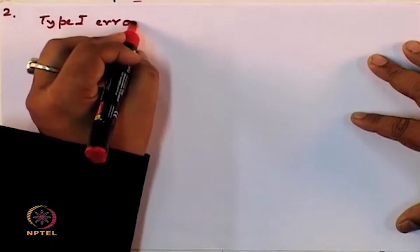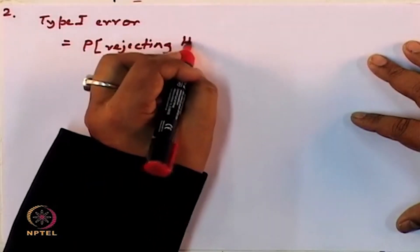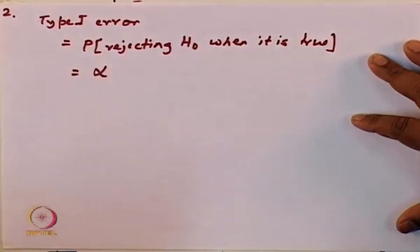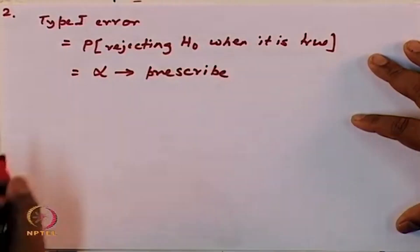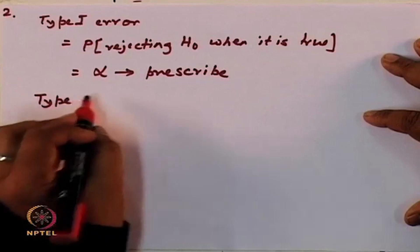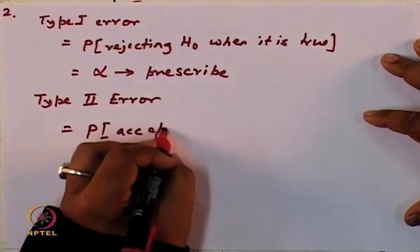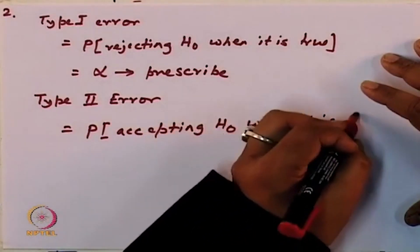While testing of hypothesis, we discussed the possibility of two types of errors. Type 1 error is the probability of rejecting H0 when it is true, and this is nothing but alpha, which you prescribe. However, you can have another type of error — type 2 error — which is the probability of accepting H0 when it is false.